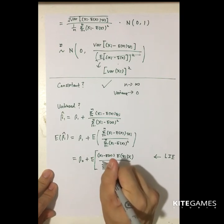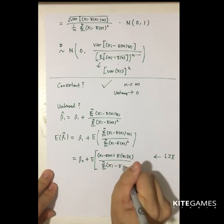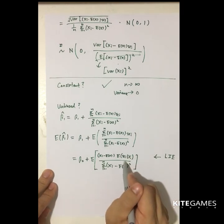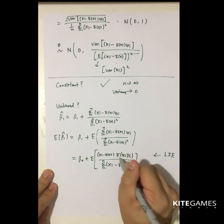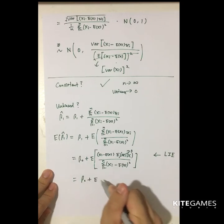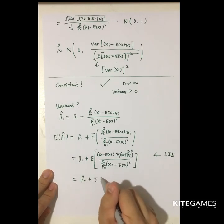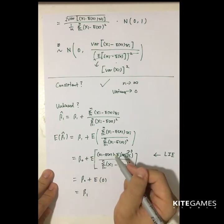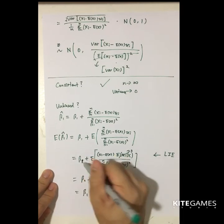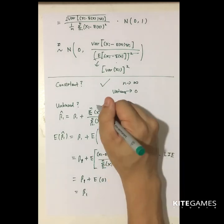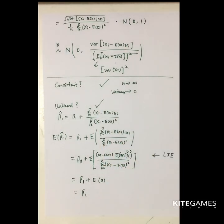What is the expected value of u_i given x? Zero. Therefore, this equals beta 1 plus the expected value of zero, which is beta 1. Sorry for any typo. So this shows that beta 1 hat is unbiased.